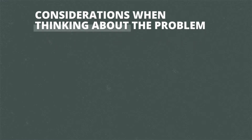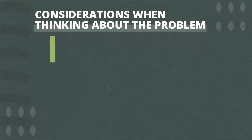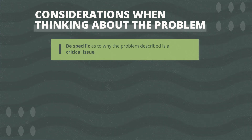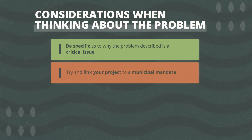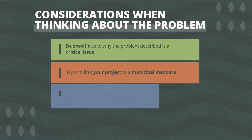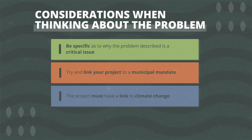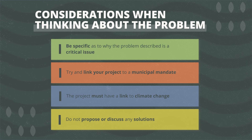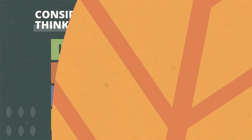When writing down a problem statement that your project will address, the following considerations need to be made. You need to be specific as to why the problem described is a critical issue. If it's possible, try and link your project to a municipal mandate. The project must have a link to climate change. At this stage, do not propose or discuss any solutions.